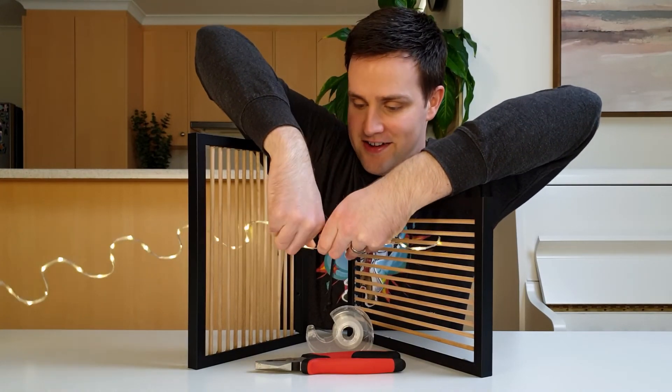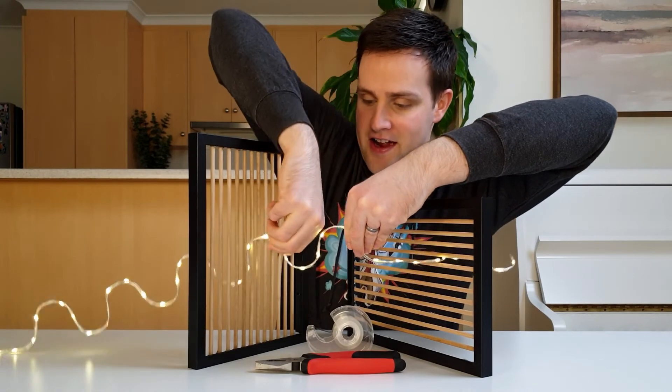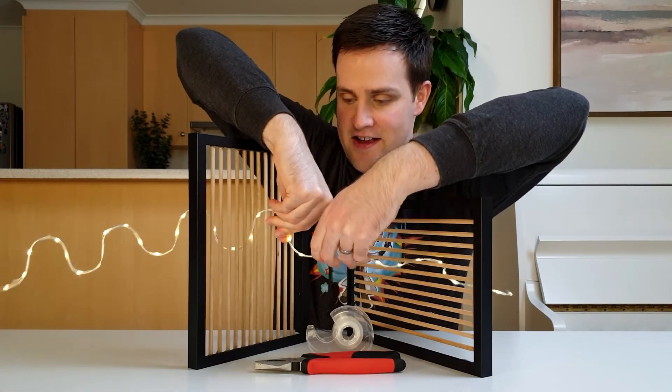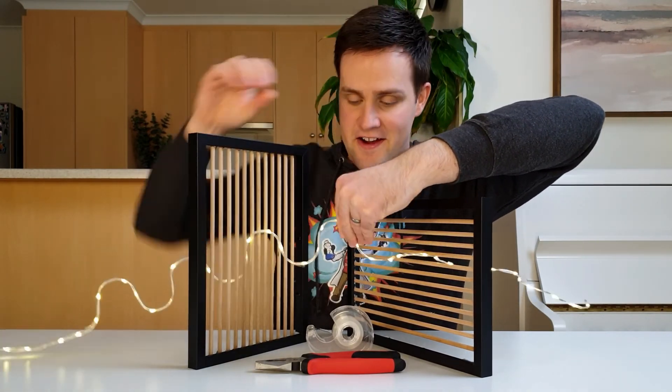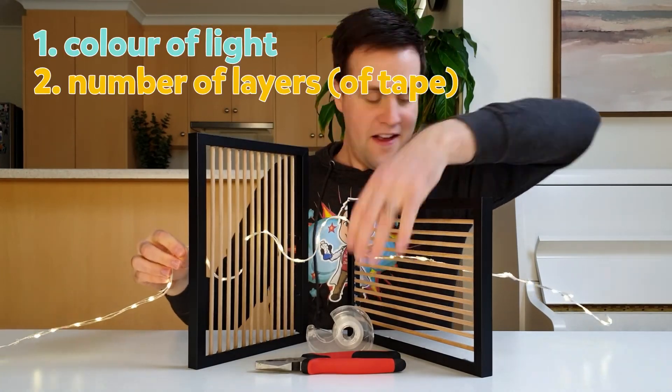And so now, when they reach the second polarizer, some of these waves are able to move through and we can see the light again. The amount of rotation depends on the color of light and the number of layers.